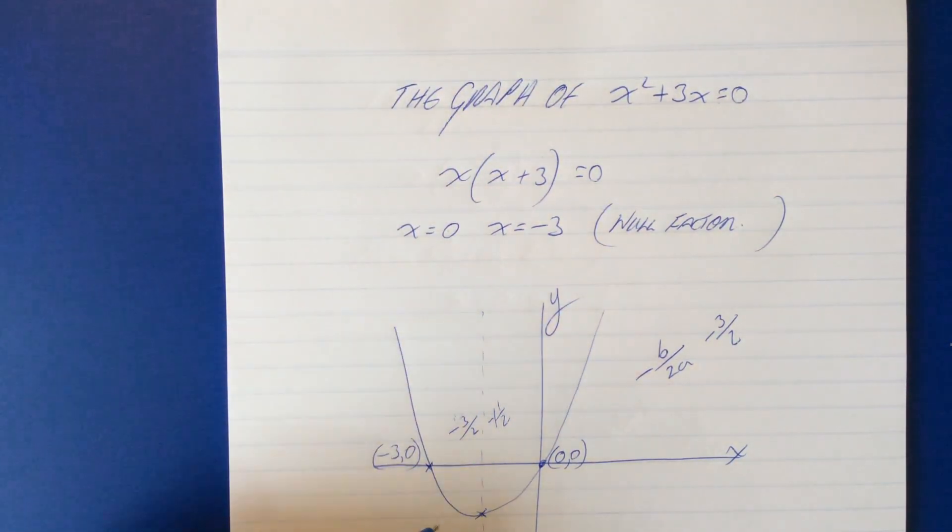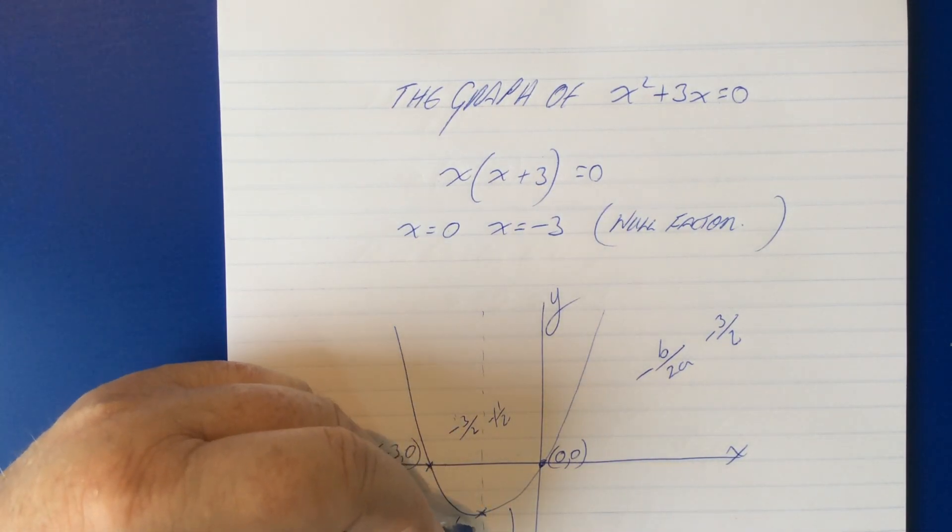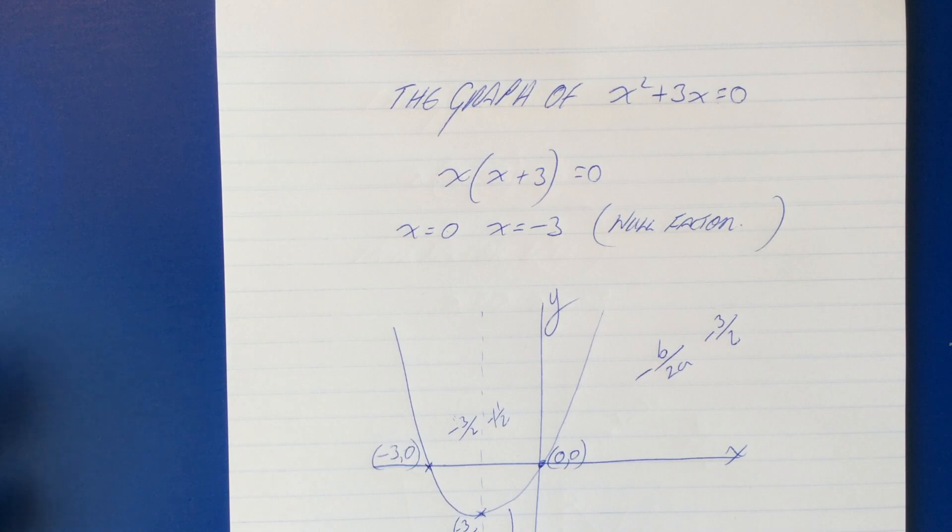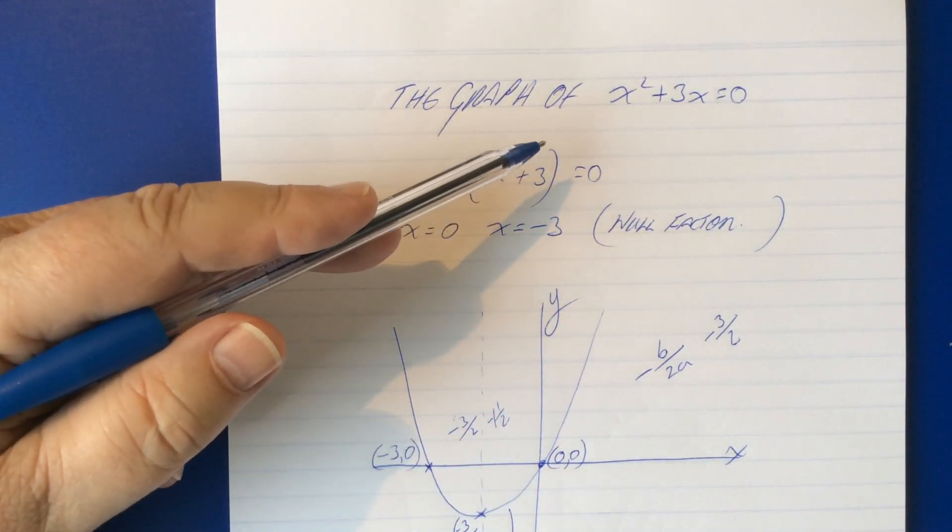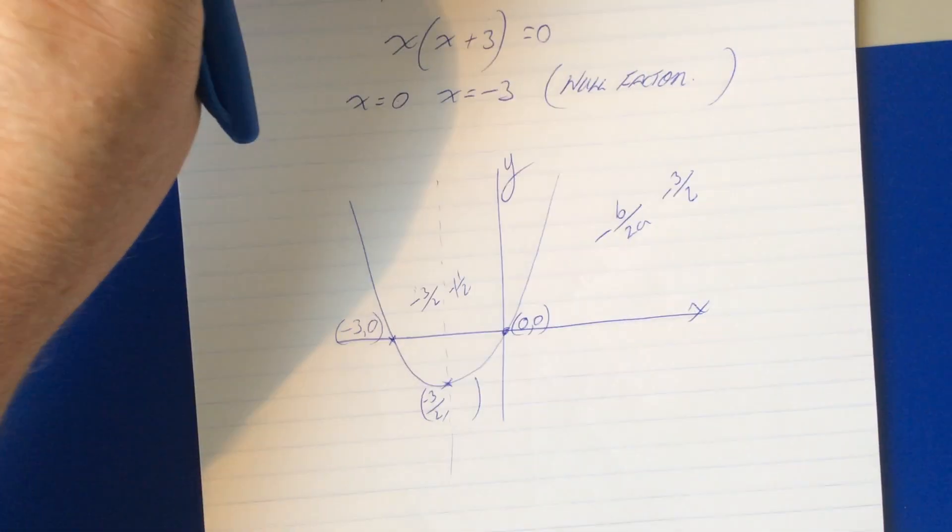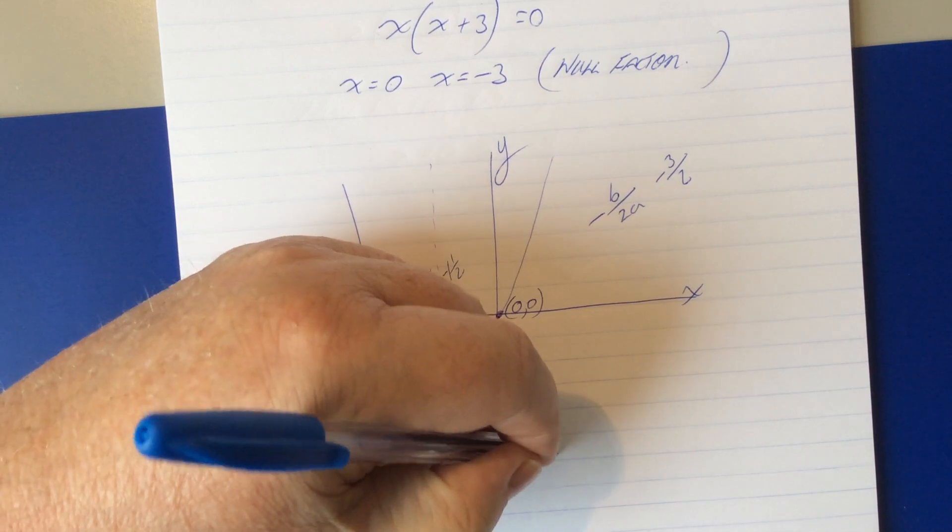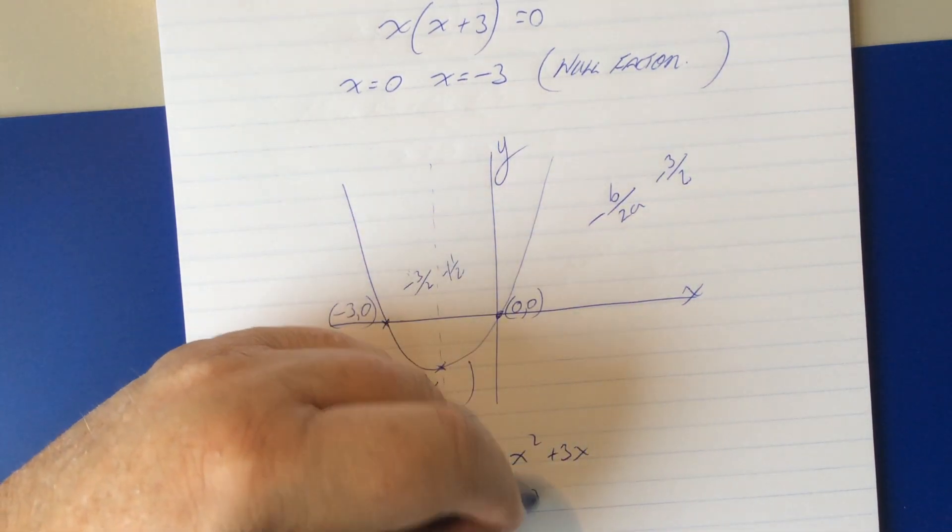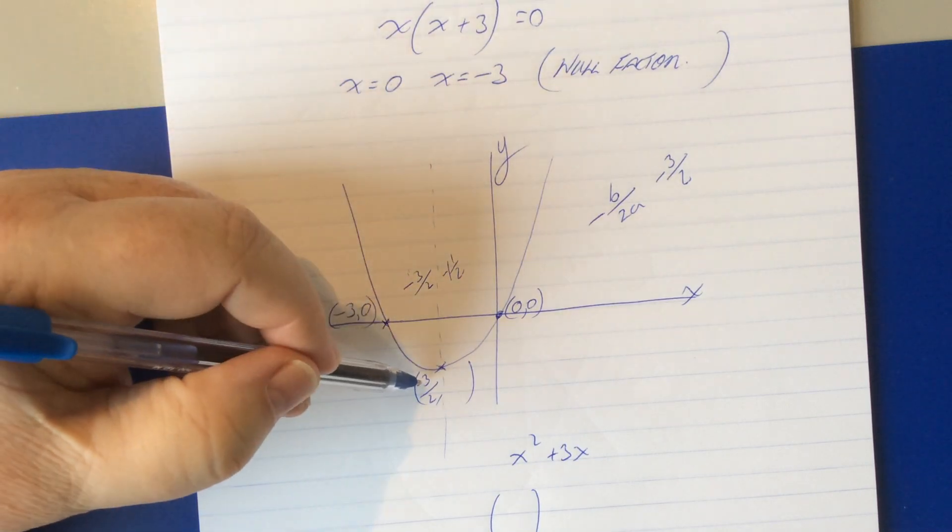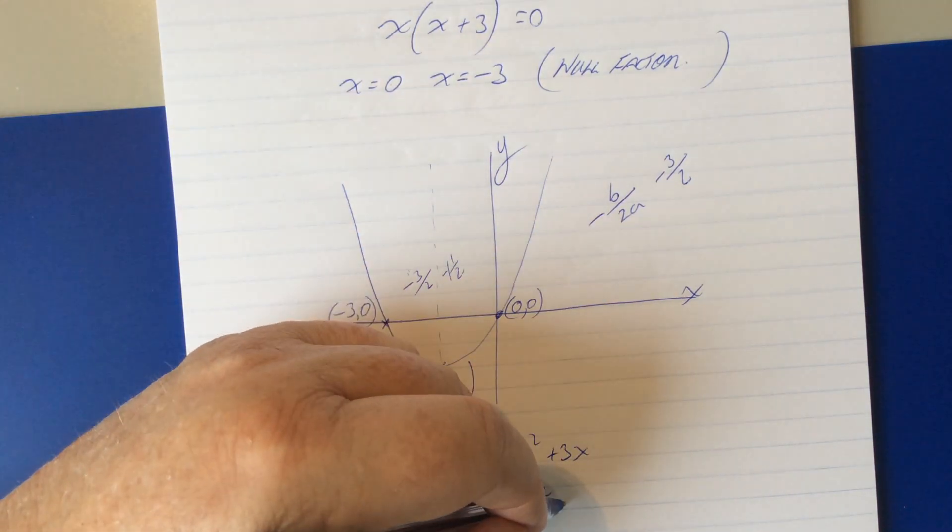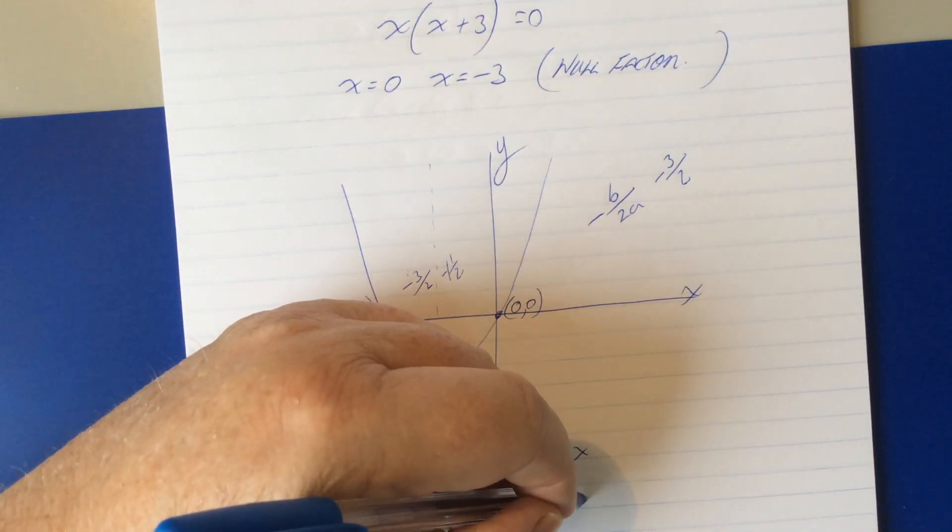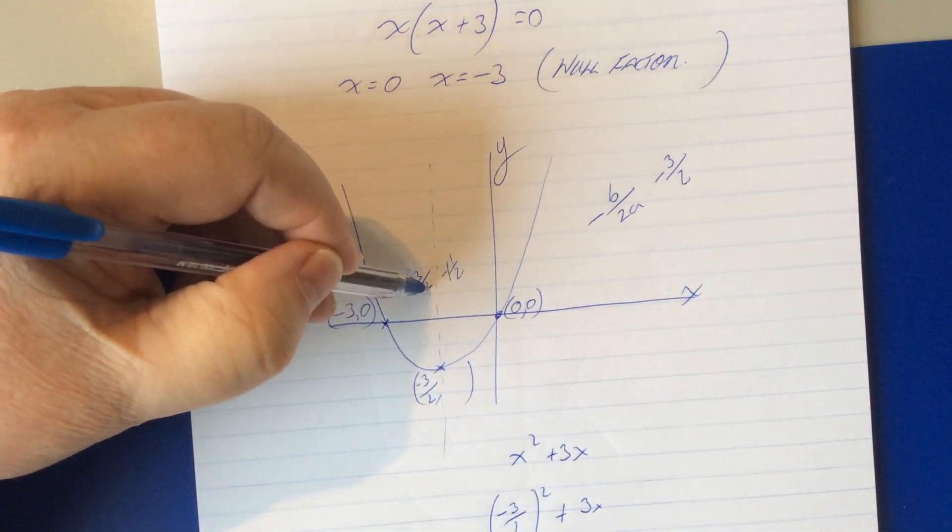Okay so our next job is to take this information so we've got one coordinate we're looking for the second and what we do is we simply put this into the equation so here goes so the equation is x squared plus 3x so negative 3 over 2 squared plus 3 times negative 3 over 2.